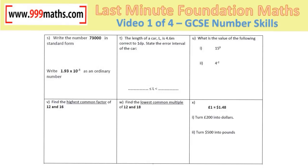In standard form, the number between 1 and 10 is 7.3, so we write 7.3 times 10 to the power of something. We count how many times the decimal point has moved: the dot goes here, and the dot used to be at the end, so it has moved 1, 2, 3, 4 times — giving 7.3 times 10 to the power of 4.